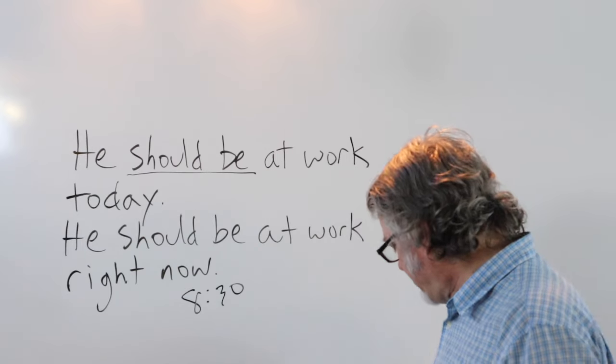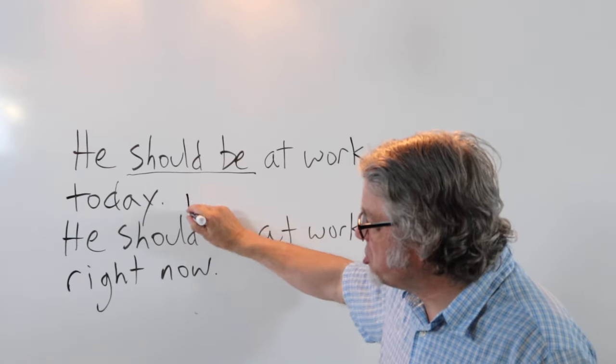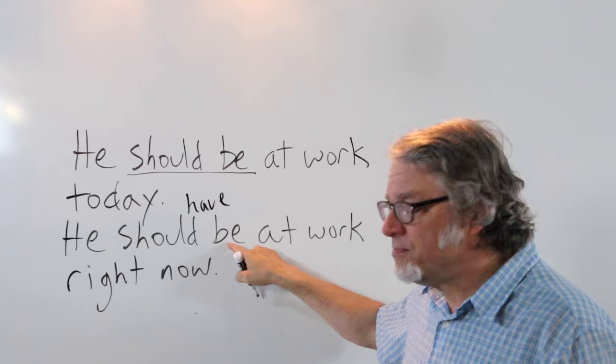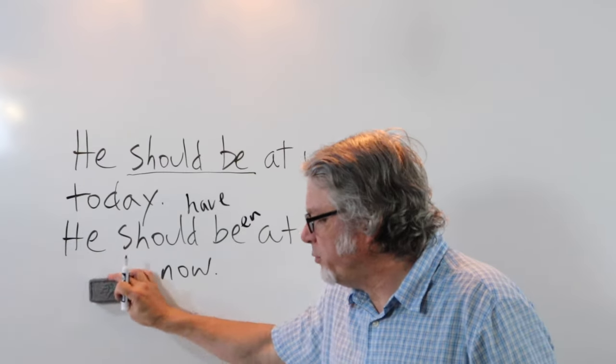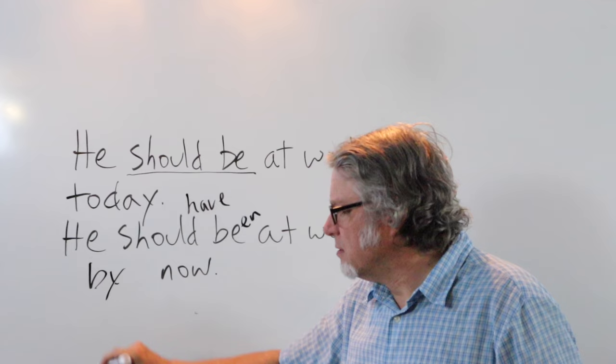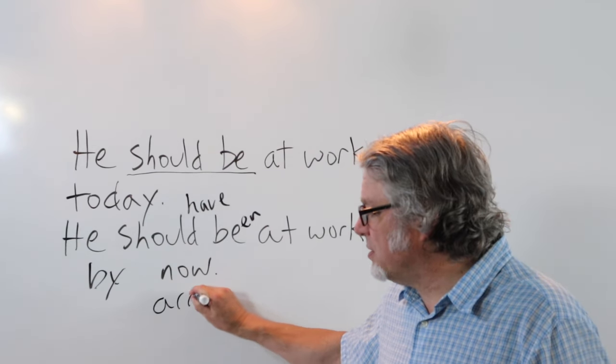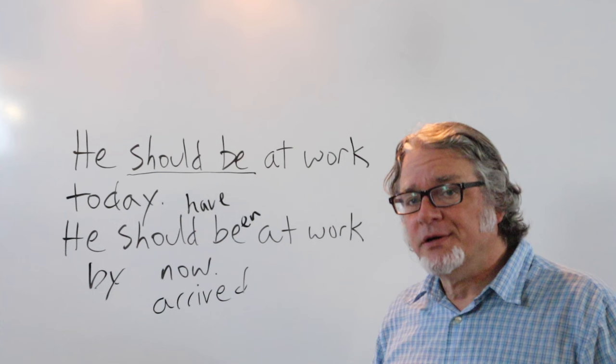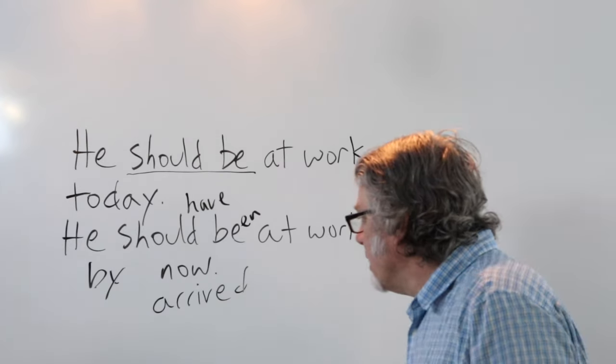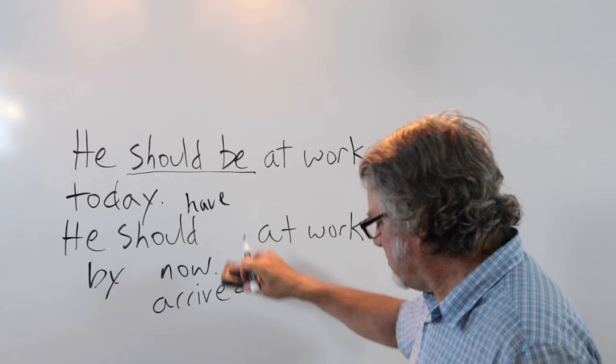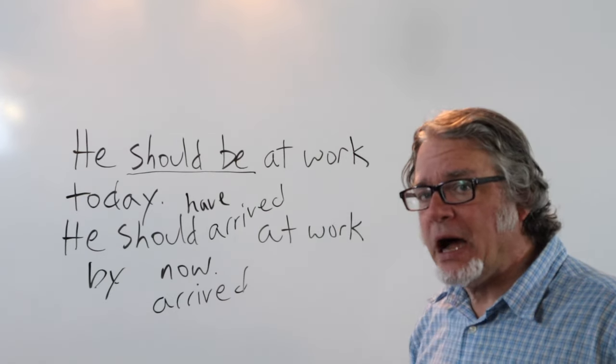If you put this in the past tense, have comes after should, and then this becomes the past participle. He should have been at work. And we can change this to by. He should have been at work by now. In this case, it could mean that the person arrived earlier and he is at work now. Although in this case, the verb arrive would be better. He should have arrived at work by now.